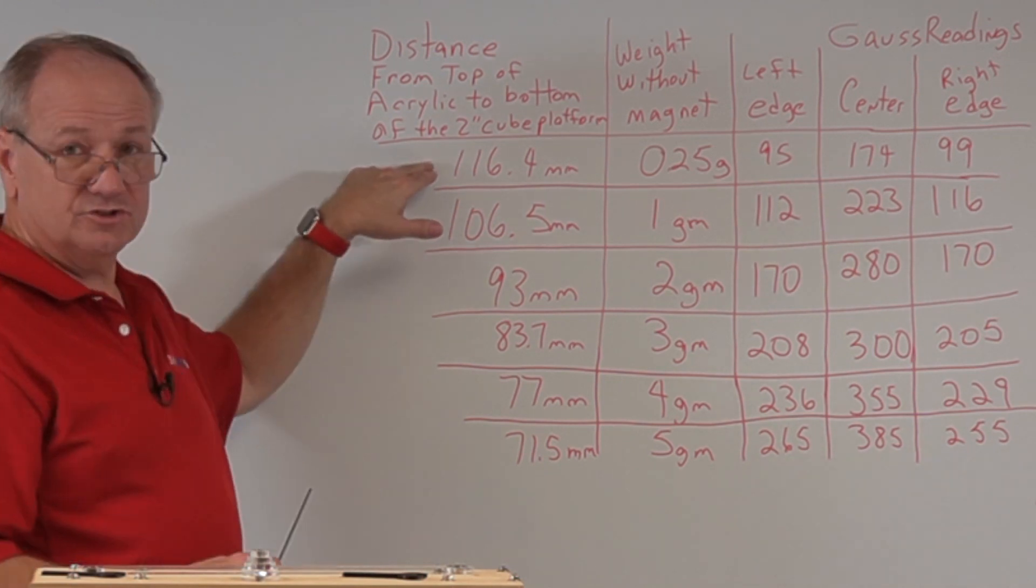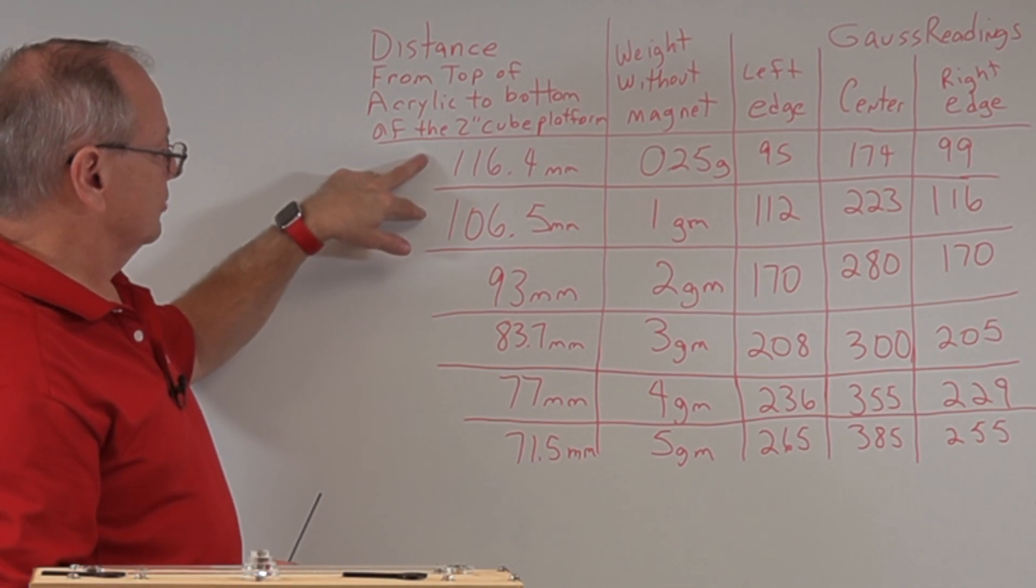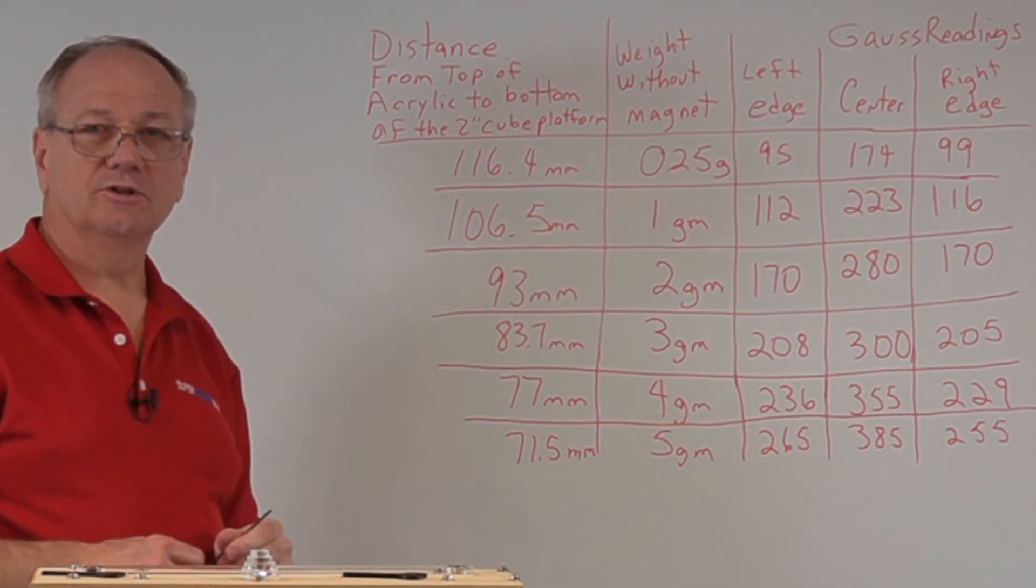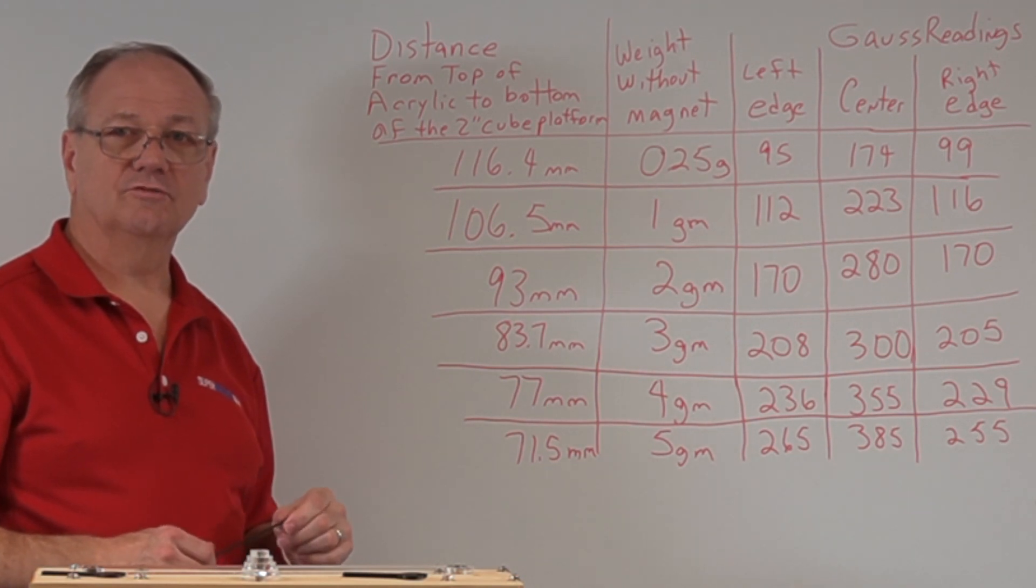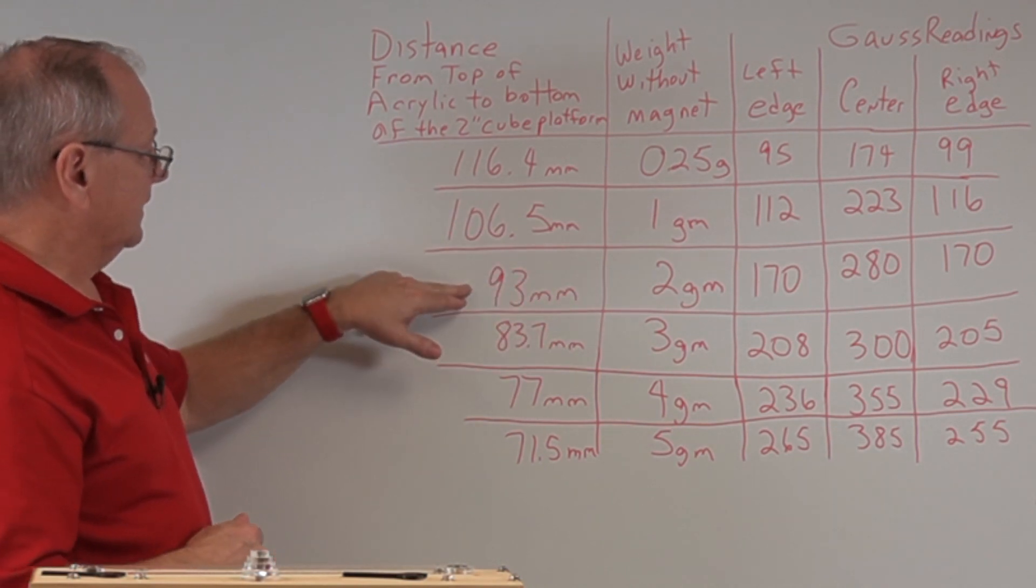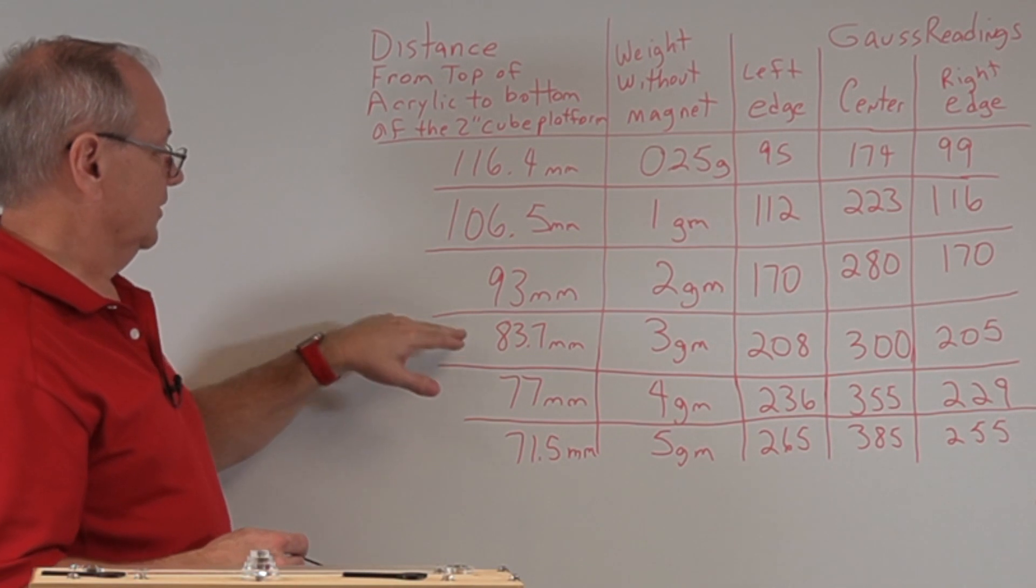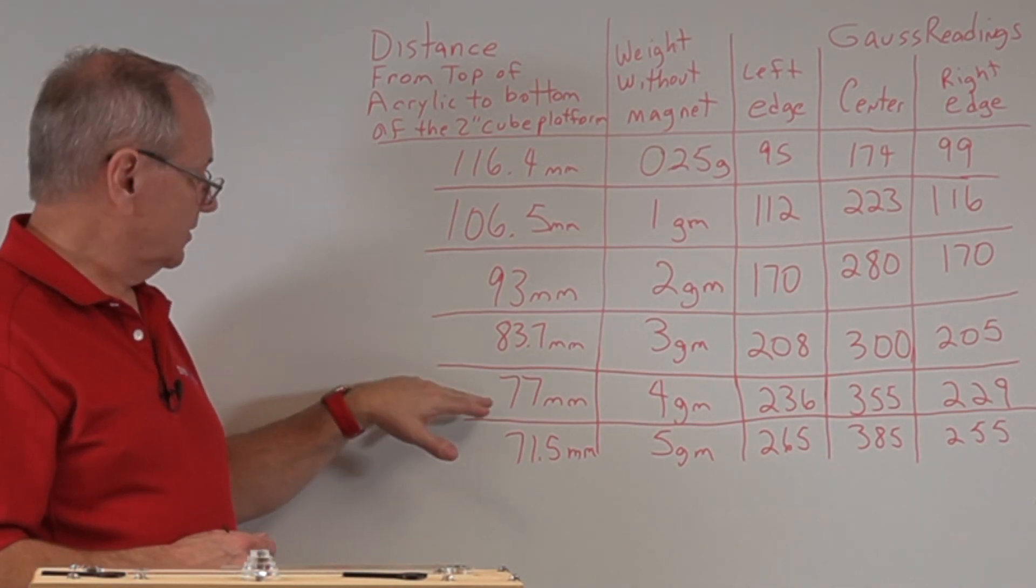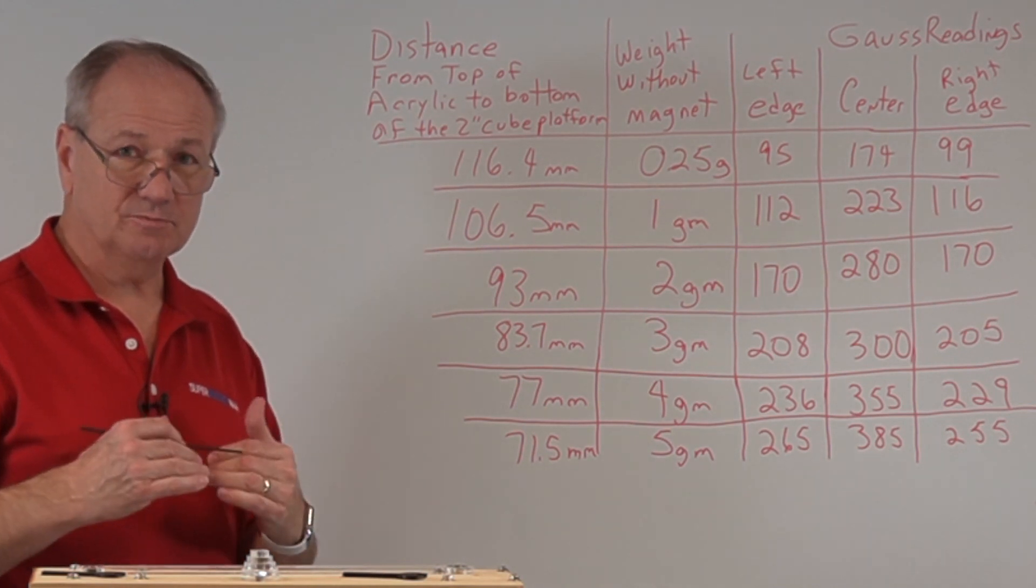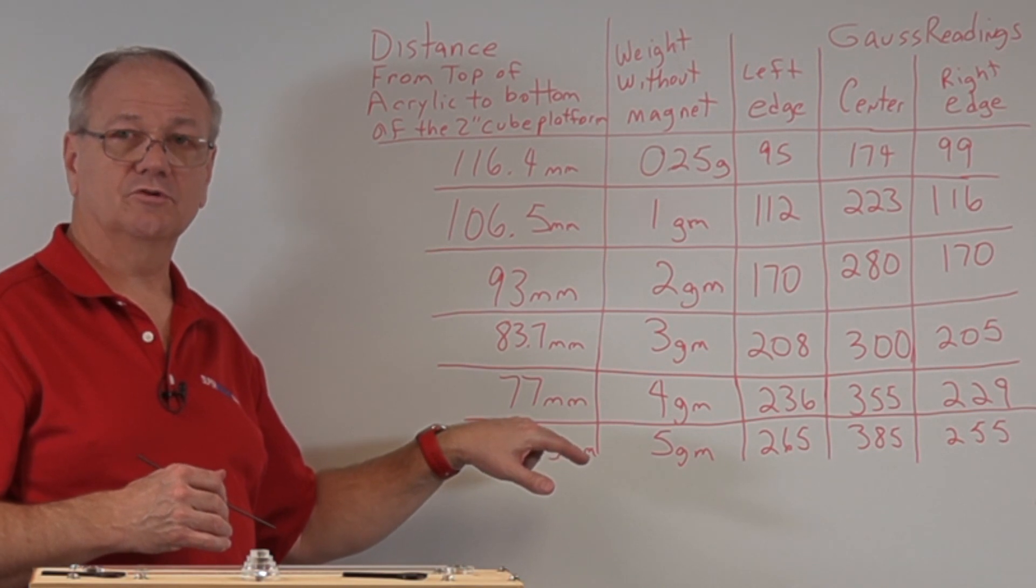At first, I went from 116 millimeters to 106. And then I sort of looked and I said, well, I dropped 10 to go from a quarter of a gram to a gram. I need to move a little bit more. So I moved about 12 millimeters to pick up double the weight, going from one gram to two. And it got pretty close. By the time I balanced it out, it was 93 millimeters away. Then 83, 77, and 71. You notice in the last steps, it's not moving as much. My percent increase in weight, I'm not continuing to double the weight. I'm just going up a little bit more.